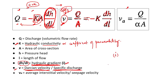Hydraulic conductivity is simply the ability of the material to transmit a fluid. In the case of hydrogeology, it is the ability of the aquifer to transmit water. The unit of hydraulic conductivity is meters per second, which is the same as Darcy velocity and specific discharge. Hydraulic conductivity is a property of both the fluid and the medium — that is, both the aquifer and the water flowing through it.